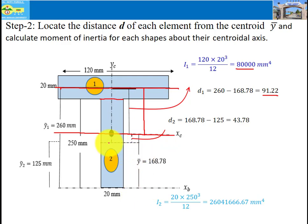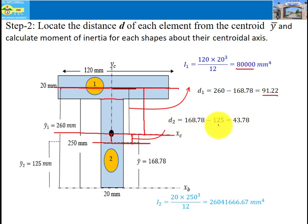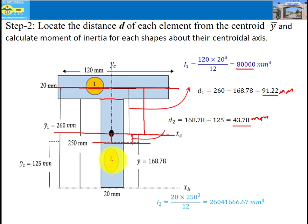For shape two, the moment of inertia about its centroidal axis is calculated. To find the moment of inertia about xc, we need distance d2. D2 equals 168.78 minus 125, so d2 equals 3.78 mm. By squaring d2, multiplying by the area of shape two, and adding to I₂ about its centroidal axis, we get the moment of inertia of shape two about xc. The total moment of inertia about xc is simply the sum of the two.